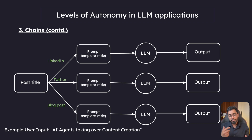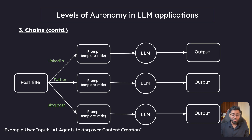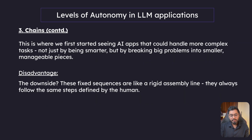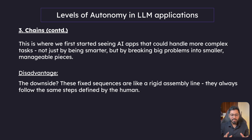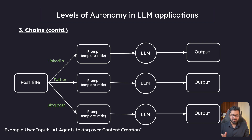The advantage of using chains is that we have three specialists instead of one generalist. But the downside is that these fixed sequences are like a rigid assembly line — they always follow the same steps defined by the human. The level of autonomy is very low; the system is not making any intelligent decisions.